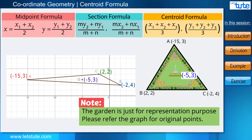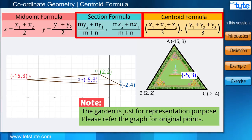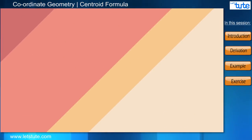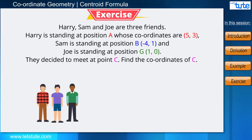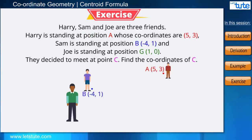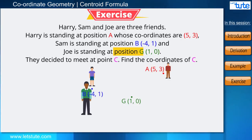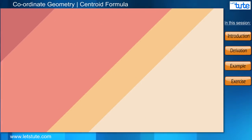The important thing is just that we need to apply the correct formula at the correct places. Try to solve this question given below. Harry, Sam, and Joe are three friends. Harry is standing at position A (5, 3), Sam is standing at position B (-4, 1), and Joe is standing at position G (1, 0). They decided to meet at point C. Find the coordinates of the point where they decide to meet.